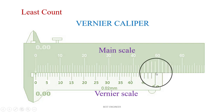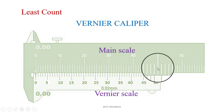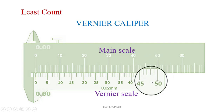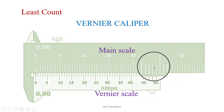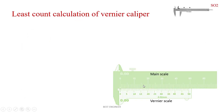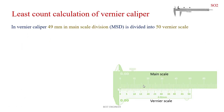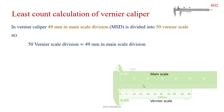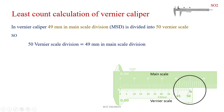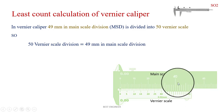In vernier caliper, 49 mm in the main scale is divided into 50 divisions in the vernier scale. So, 50 vernier scale divisions is equal to 49 mm in the main scale.